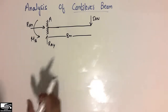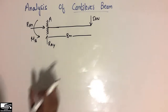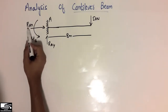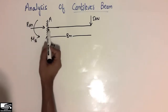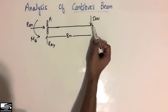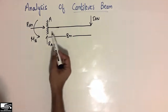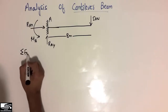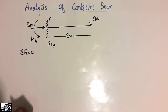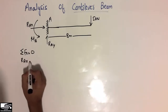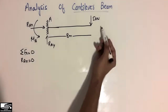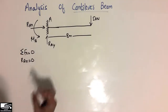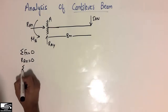First we will find these three support reactions, then the shear force and bending moment diagram. RAX is the horizontal resistance of this cantilever beam. Since there is no horizontal force acting on this beam, and the summation of forces in the horizontal direction equals zero, RAX will be zero.